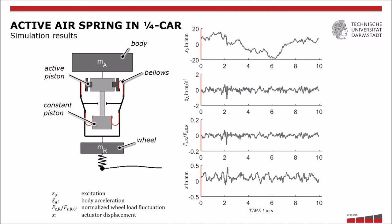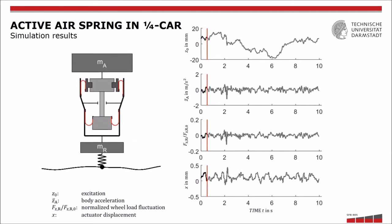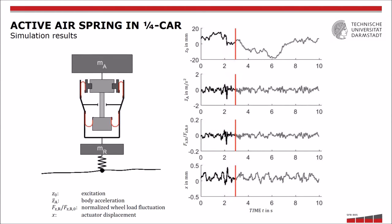Displacements of only a few millimeters produce a relative area change of 40%. This simulation with a so-called quarter car model visualizes how the active air spring damper works.